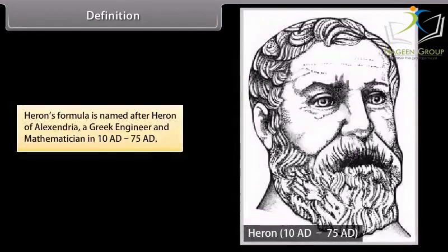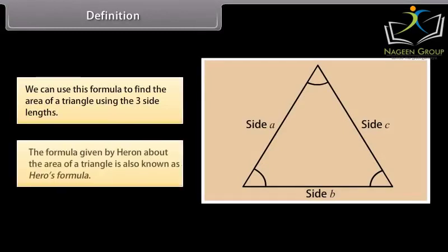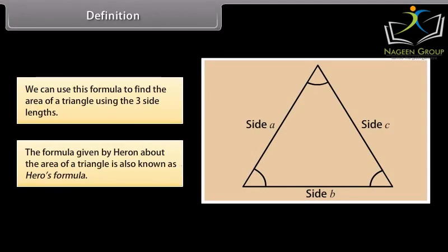Heron's formula is named after Heron of Alexandria, a Greek engineer and mathematician. We can use this formula to find the area of a triangle using the three side lengths. The formula given by Heron about the area of a triangle is also known as Heron's formula.